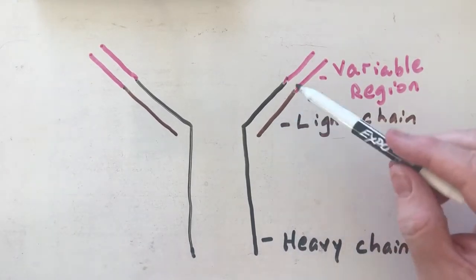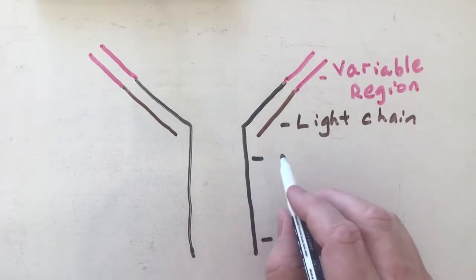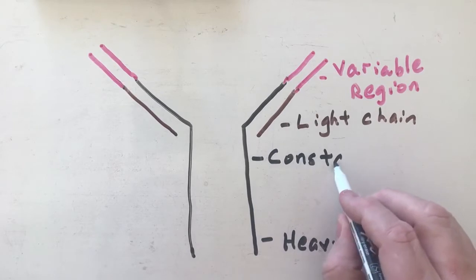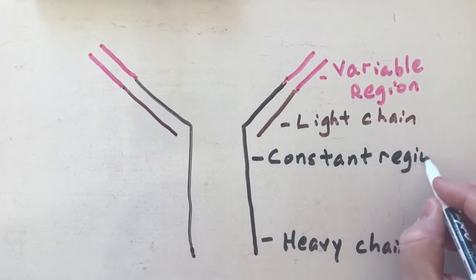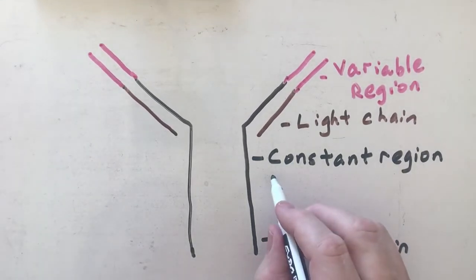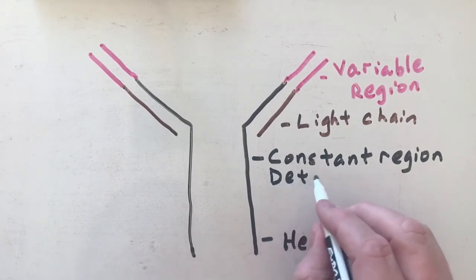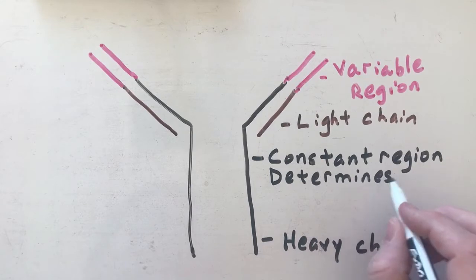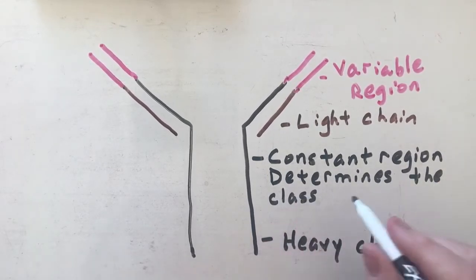The next thing you have is where you see the brown on the light chain and all of this black—this is going to be called the constant region. The constant region determines the type of antibody it is, or the class of antibody. I will go into that in another video.